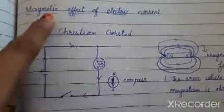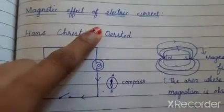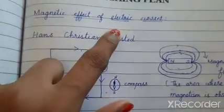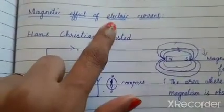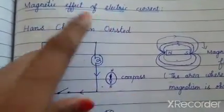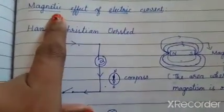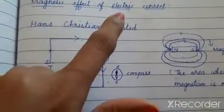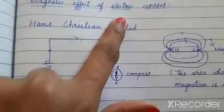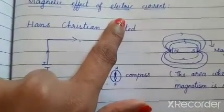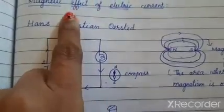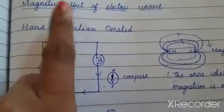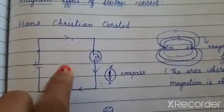We are now moving to the next effect of electric current — the magnetic effect of electric current. On passing electricity, magnetism is observed. How is it possible that just by passing electricity, a magnetic effect is noticed? Let us see now.